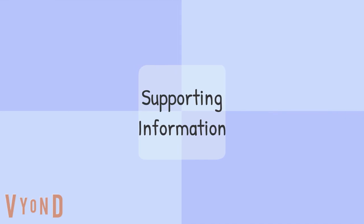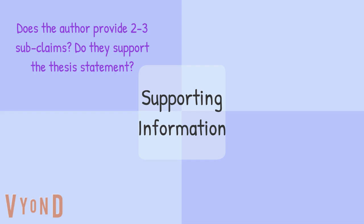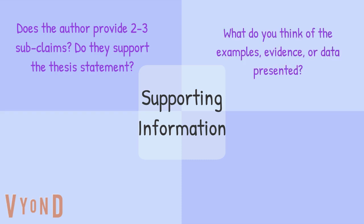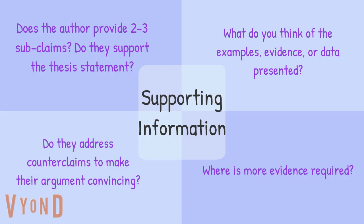When looking at the supporting information, we're asking: does the author provide two to three subclaims, and do the subclaims support the thesis statement? What are the claims? Are the claims easily identified, and if not, what could the author add? What do you think of the examples, evidence or data presented? Can you see how they relate to the argument? Is the author presenting facts or opinions, and how are they used? Is there any more information needed before the conclusion can be accepted? Does the author support their claims with evidence and reasoning? Where is more evidence required, and where could the author provide more reasoning to make connections between claim and evidence explicit? Do they address counterclaims to make the argument convincing, and if not, what could they add?